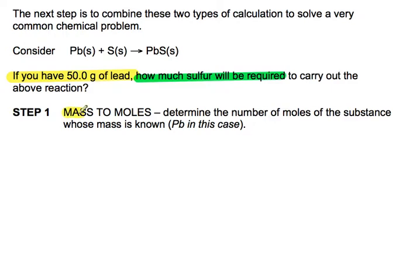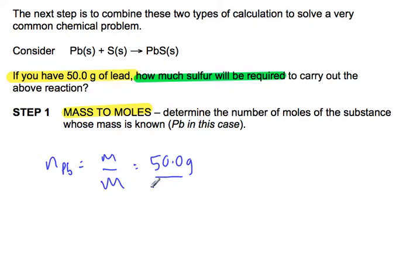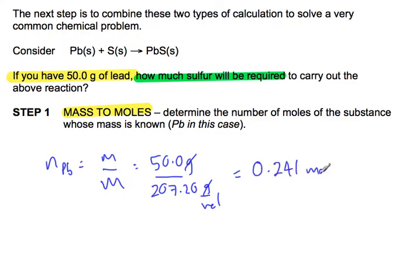The first step is a mass-to-moles calculation. We have a mass of lead and we're looking for the number of moles of lead. Number of moles of lead equals mass divided by molar mass. Our mass was given as 50.0 grams; the molar mass of lead is 207.20 grams per mole — remember, two decimal places for molar masses. That gives us 0.241 moles of lead.